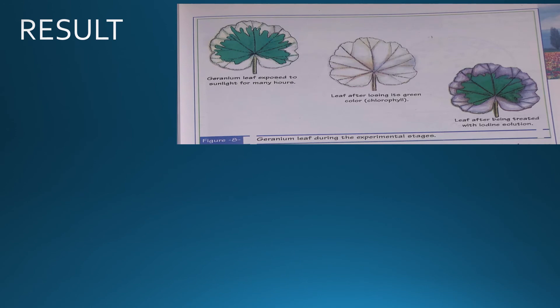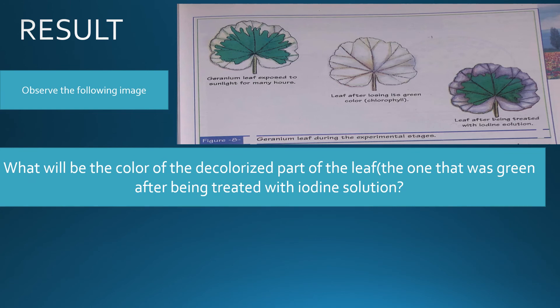Now I want you to observe the following image — figure 8 — which shows a geranium leaf during the experimental stages. First we took the geranium leaf and exposed it to sunlight for many hours. Then the leaf lost its green color, so there is no more chlorophyll. Then we treated the leaf with iodine solution in the third stage. What will be the color of the decolorized part of the leaf — the one that was green — after being treated with iodine solution? Think, then answer.